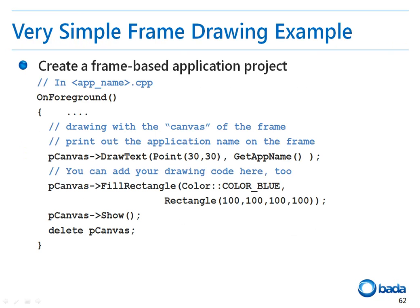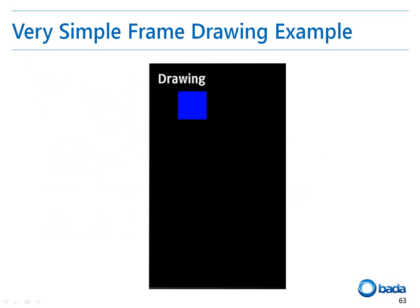Let's take a look at an example of drawing a simple object on a frame. In a frame based application project, if you open the application name .cpp file, there is the onForeground function. If you look at this function, you will see the drawText function of the pCanvas is used. This statement draws the application name on the screen. You can also draw other objects using pCanvas. In this example, a rectangle is drawn on the screen using the fillRectangle function. In a frame based application, you can draw objects by adding drawing functions directly into the onForeground function.